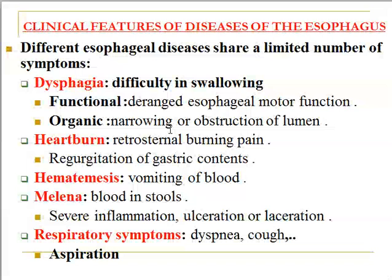Dysphagia may be functional, meaning there is a deranged esophageal motor function, or organic, meaning there is narrowing or obstruction of the lumen. The second symptom is heartburn — a retrosternal burning pain associated with regurgitation of gastric content — related to a defect in the lower esophageal sphincter. The third is hematemesis, which is vomiting of blood, and the fourth is melena, which is blood in the stool.